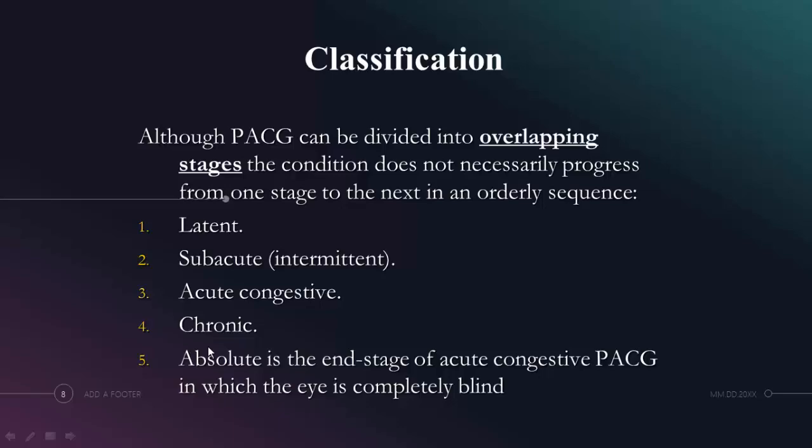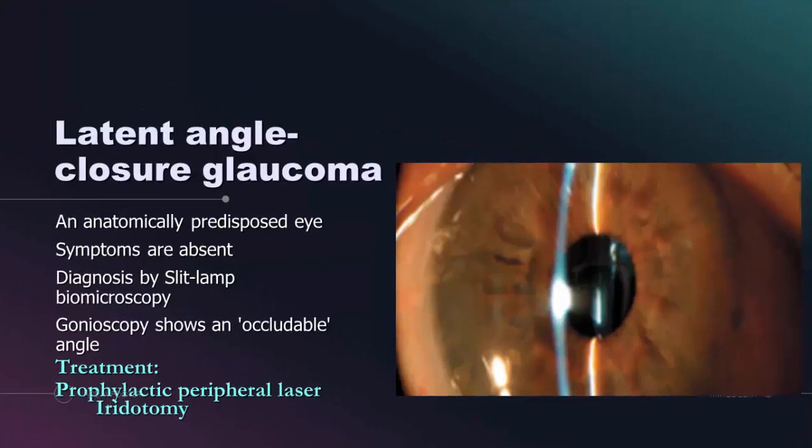Latent angle closure glaucoma is an early stage of the disease, characterized by an anatomically predisposed eye with a short axial length, shallow anterior chamber, and high liability for angle closure. Diagnosis is done mainly by slit lamp biomicroscopy. The patient does not complain. On gonioscopy, we notice a suspicion of angle closure — what is called an occludable angle. Treatment is done prophylactically by peripheral YAG laser iridotomy to allow aqueous to pass from the posterior chamber to the anterior chamber easily, equalizing pressure at both sides and making iris bombé less likely.